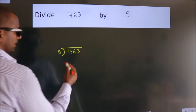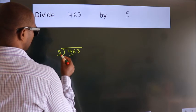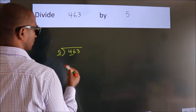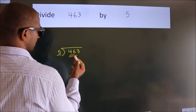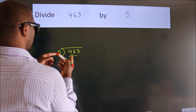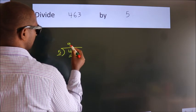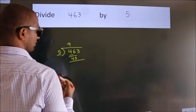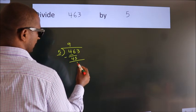Next, here we have 4, here 5. 4 is smaller than 5, so we should take 2 numbers: 46. A number close to 46 in the 5 table is 5 nines, 45. Now we subtract and get 1.